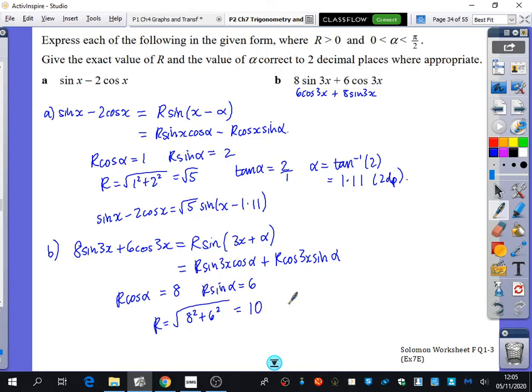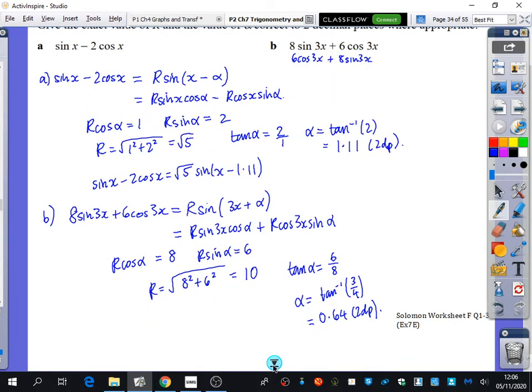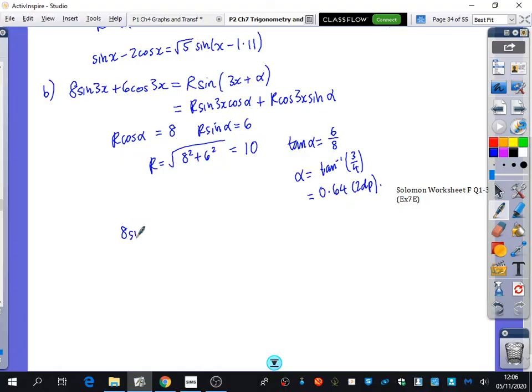And then tan alpha is sine over cos, which is 6 over 8. So alpha is the inverse tan of 3 quarters, or 6 over 8. We're in radians mode. And we get 0.64 to 2 decimal places. Meaning that 8 sine 3x plus 6 cos 3x is the same as 10 sine 3x plus 0.64.